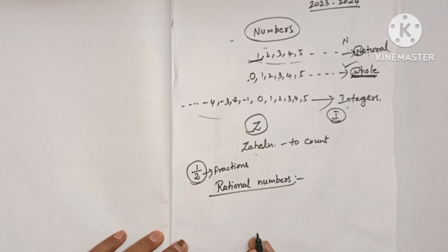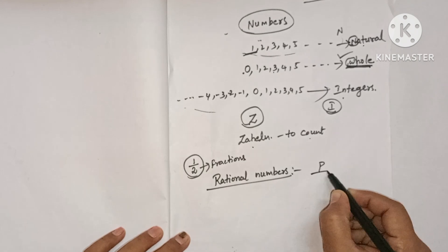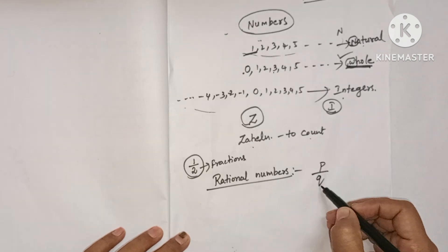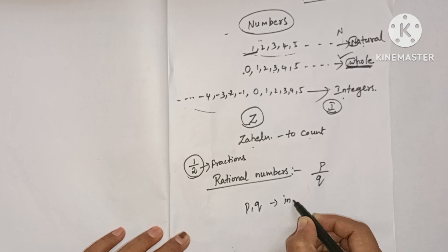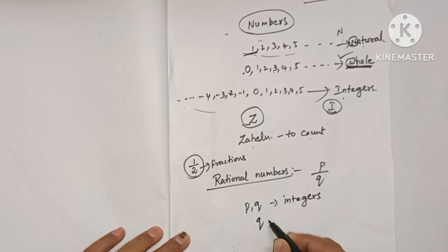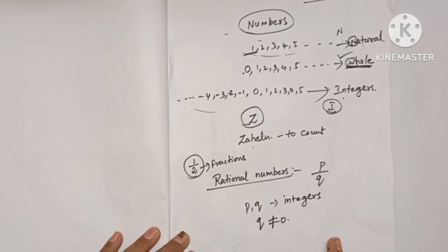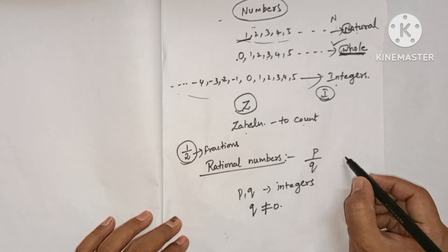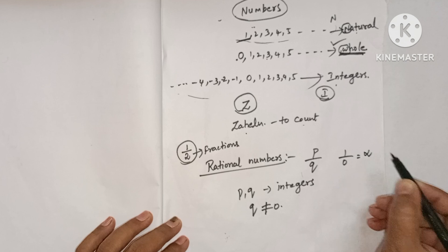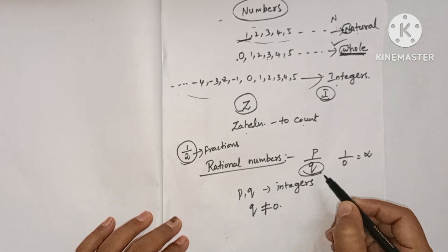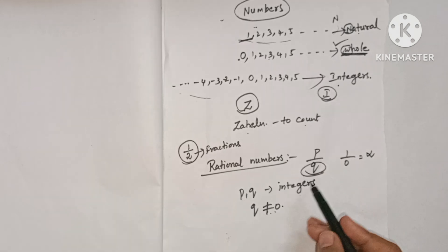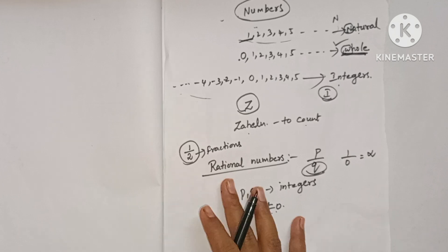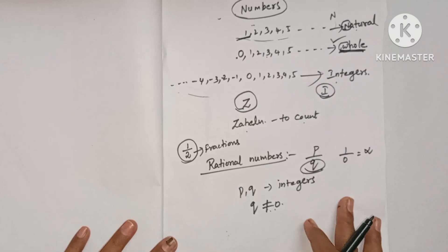Rational numbers are the numbers which can be written in the form p/q, where p and q are integers and, most importantly, q is not equal to zero. If the denominator is zero, the value would be infinite or undefined — so the denominator must not be zero.